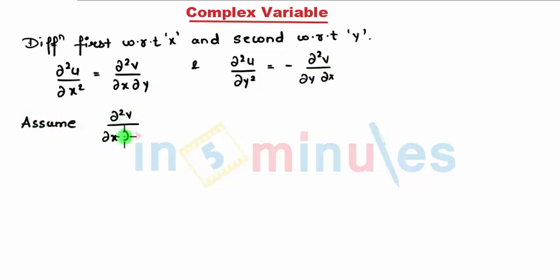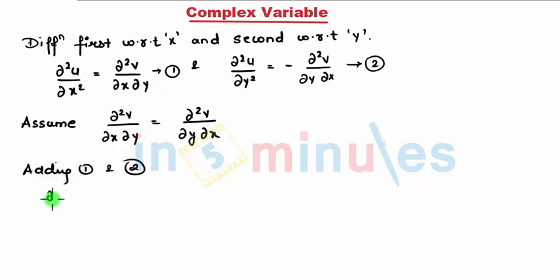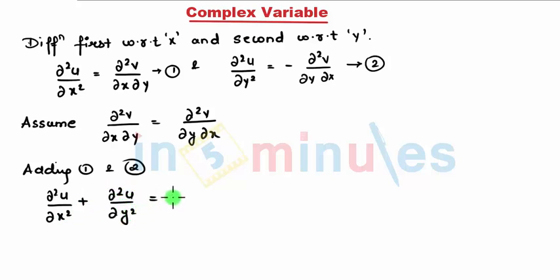I assume that ∂²v/∂x∂y = ∂²v/∂y∂x. Normally they are the same, but for some functions they are not, so I need to assume this. Calling these equations (1) and (2), by adding (1) and (2) I get ∂²u/∂x² + ∂²u/∂y² = 0.